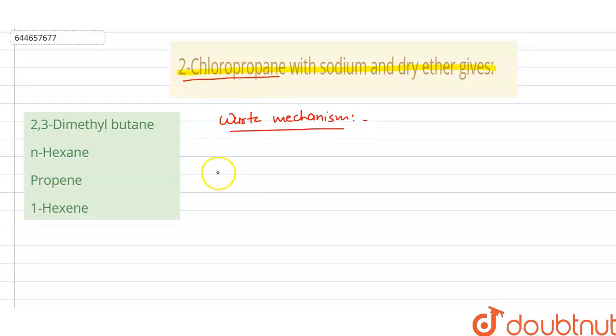What happens: we have an alkyl halide. We have given 2-chloropropane, so its structure will be CH3-CH(Cl)-CH3. Now, we know that chlorine is more electronegative than carbon, so it will have a negative charge, due to which it will act as a leaving group.